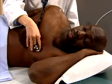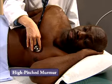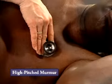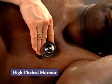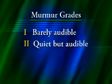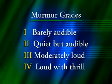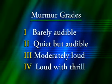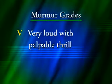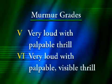Also determine the murmur's pitch, which may be high, medium, or low. And rate its intensity. A grade one murmur is barely audible. Grade two is quiet but clearly audible. Grade three is moderately loud. Grade four is loud and associated with a thrill. Grade five is very loud with an easily palpable thrill. Grade six is very loud with a palpable and visible thrill.